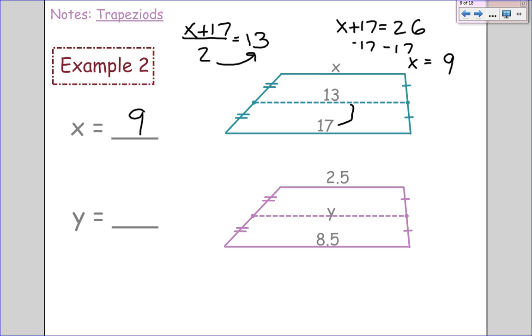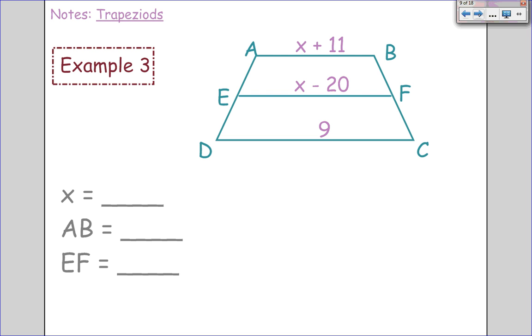Or you could have said, what do I do to get from 17 to 13? We go down 4, so we go down 4 again, and you get 9. Here, you have both of your bases. So 2.5 plus 8.5 divided by 2 equals y. 2.5 plus 8.5 is 11, which divided by 2 is 5.5. So make sure you understand this formula: base 1 plus base 2 divided by 2 gives you the mid-segment. And the mid-segment, as a reminder, is the segment that connects the midpoints of the legs.